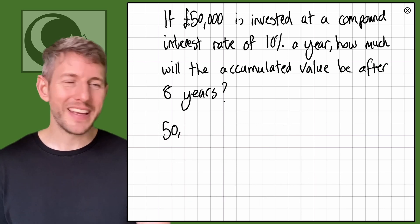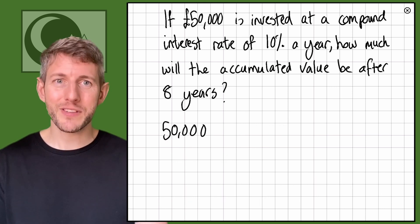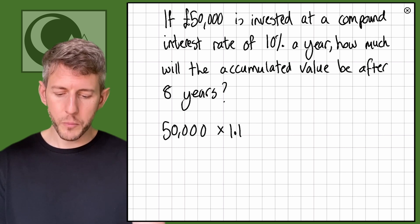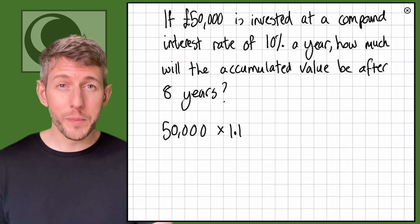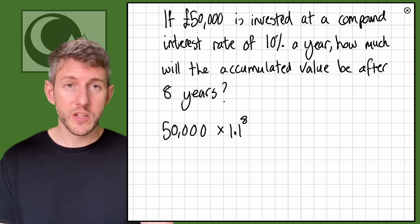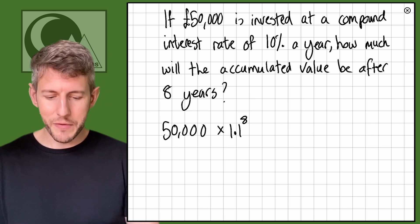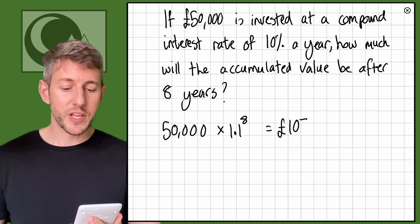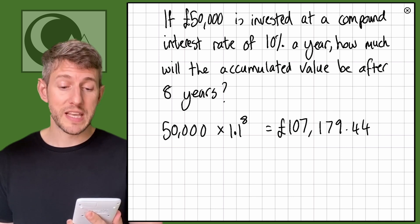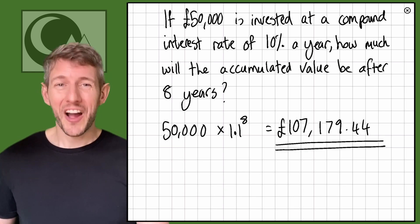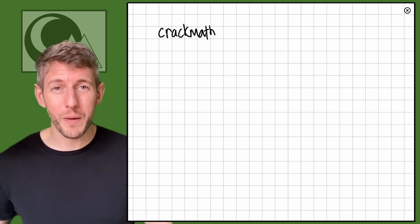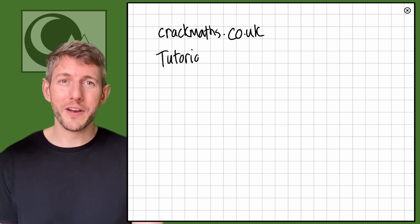The value is £50,000. Rather than writing 1.1 eight times, I'm going to use 50,000 times 1.1 to the power of eight. The answer is £107,179.44. Thank you very much for watching — I hope that was useful, and I will see you in another tutorial.